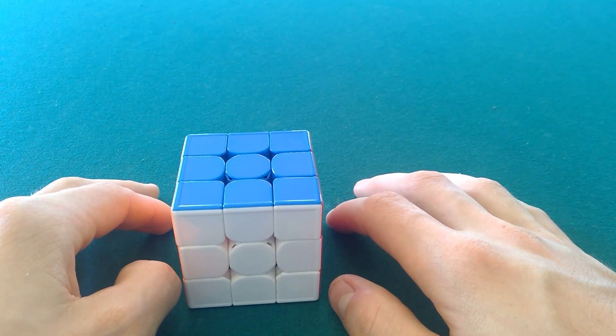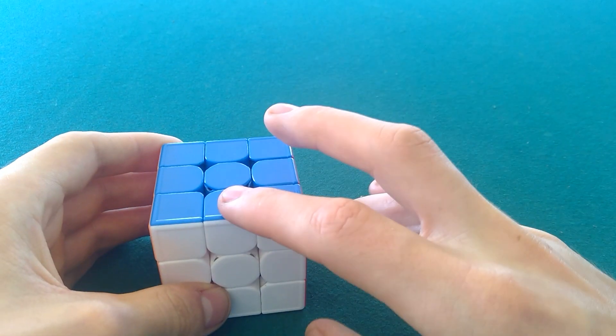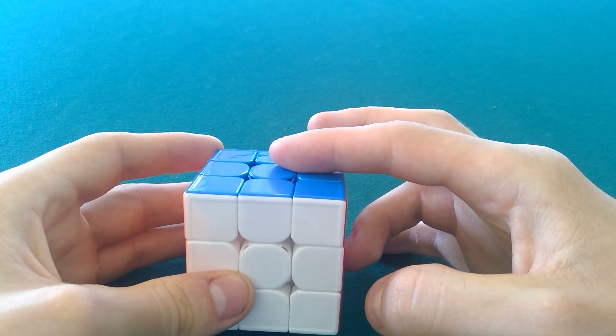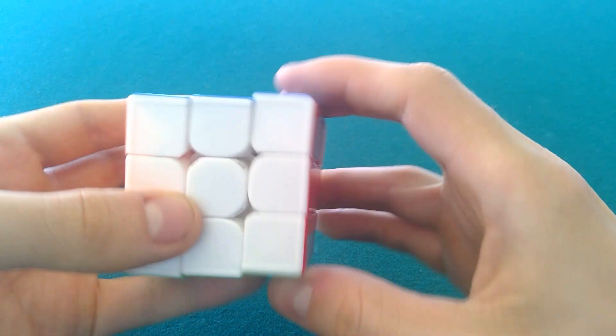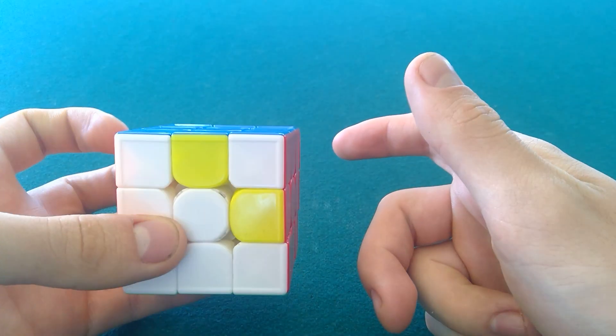That one's another one that's super simple and everyone kind of knows that one. This one seems to be, I bet most people know it, but just in case I'll go over it. So it's R U2 R U2 R U2 and then it swaps these two and these two.